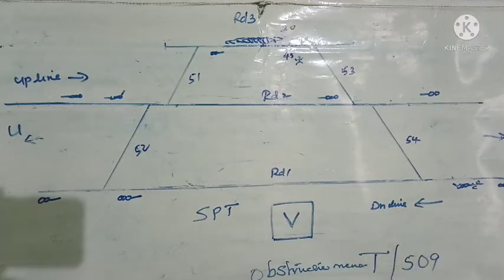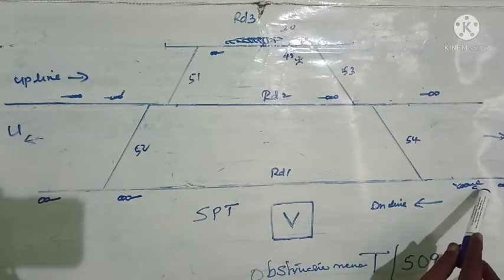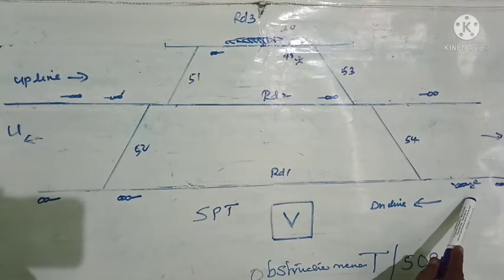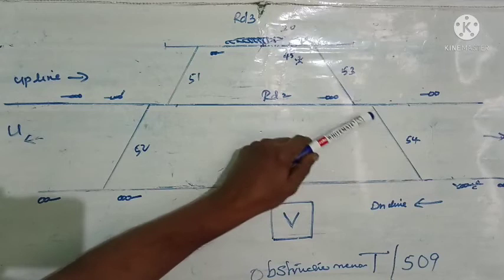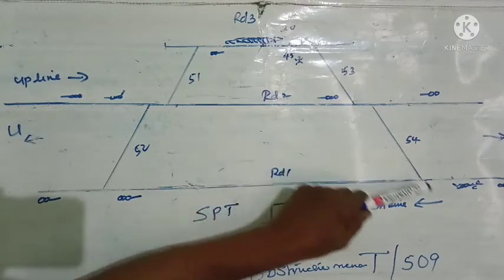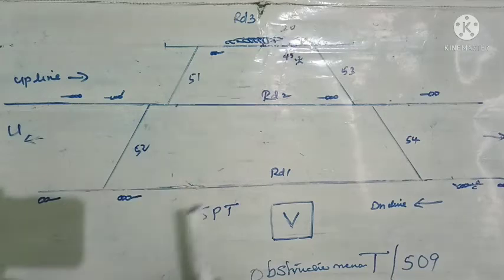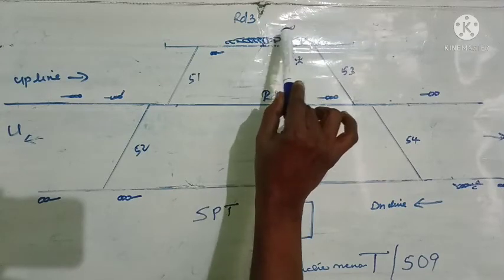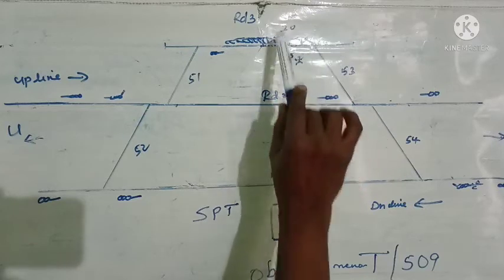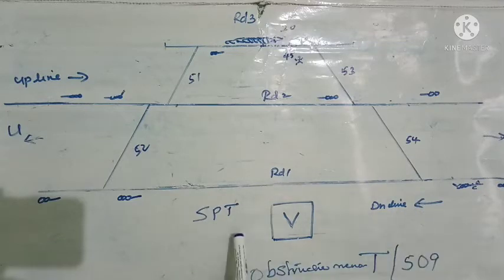T/509 will also have a private number. The station master will write this message in duplicate and hand it to the traffic staff, who will hand one copy to the loco pilot and get his signature on the other copy. The staff will then pilot the train to road 3. Here also it must be ensured that the points are set, clamped, and padlocked for the route. A traffic staff is posted at the point and another staff at 45 meters away from the obstruction — one to show hand signal at the point leading to the reception line and another to show hand danger signal from 45 meters from the obstruction. These conditions are common for all kinds of reception on an obstructed road, whether calling-on, SPT, or obstruction memo.